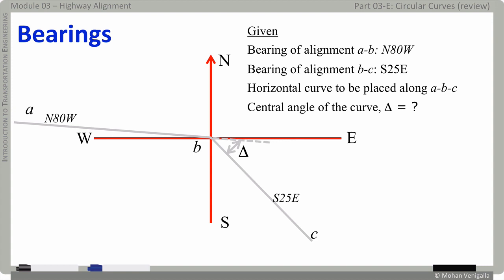N80W for A B means it is 80 degrees from north likewise B C is at 25 degrees from south and by doing simple algebra you will get the value of delta as 55 degrees.